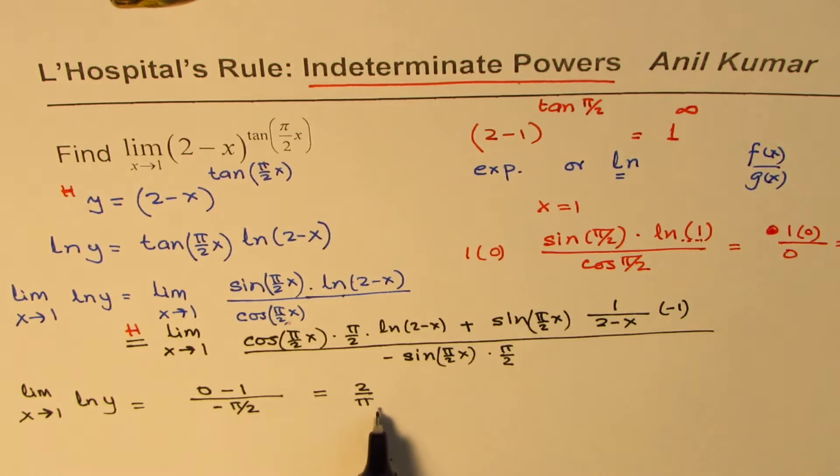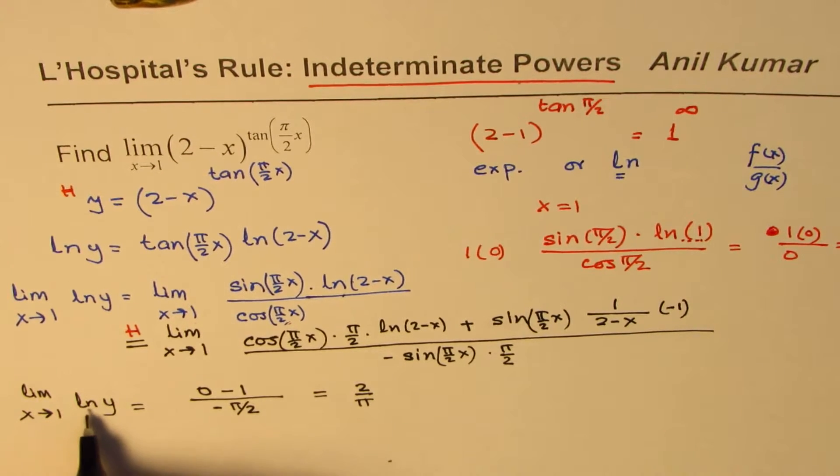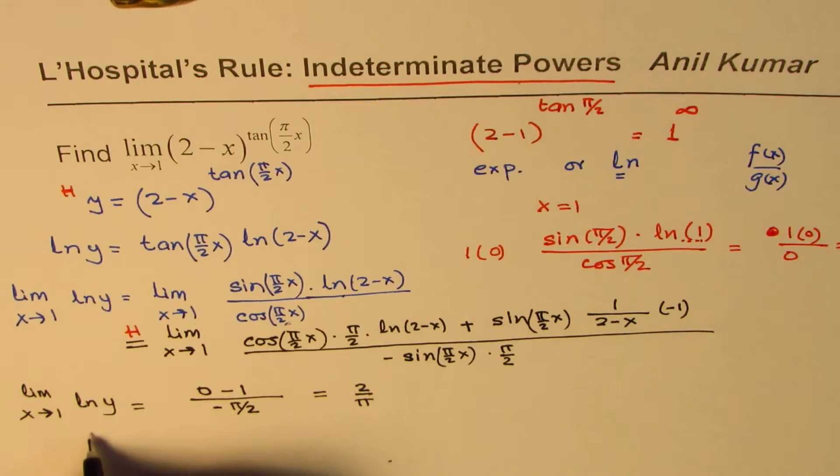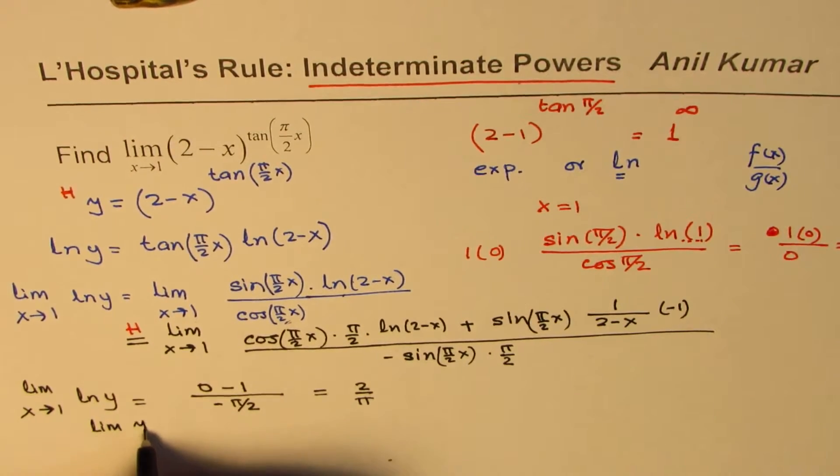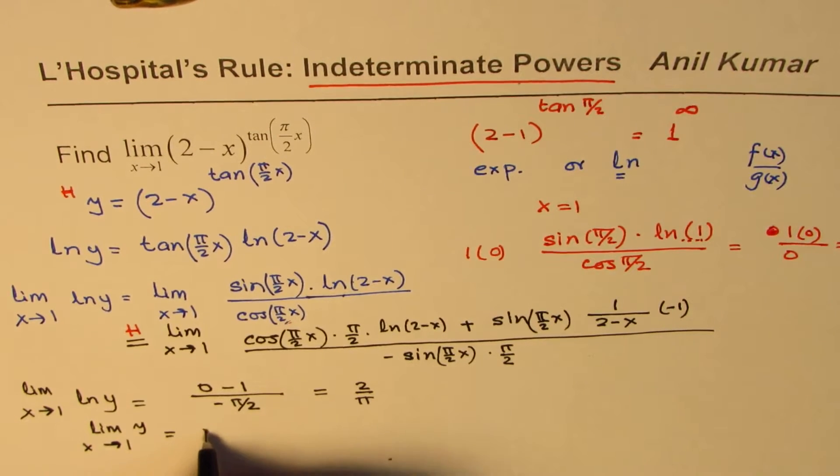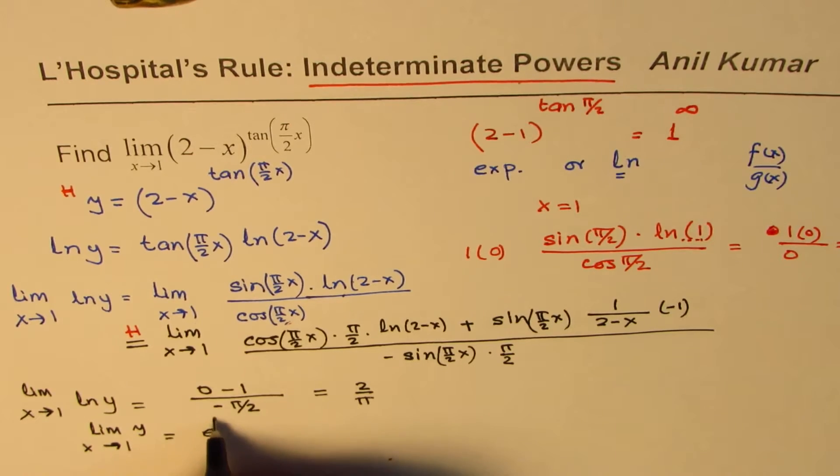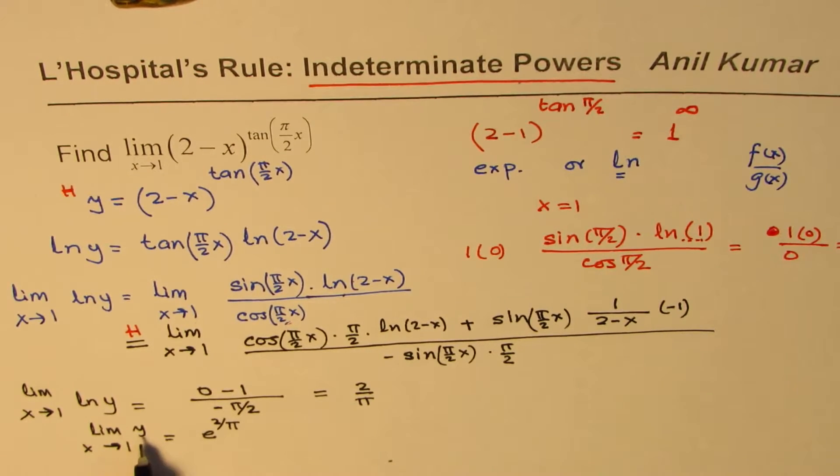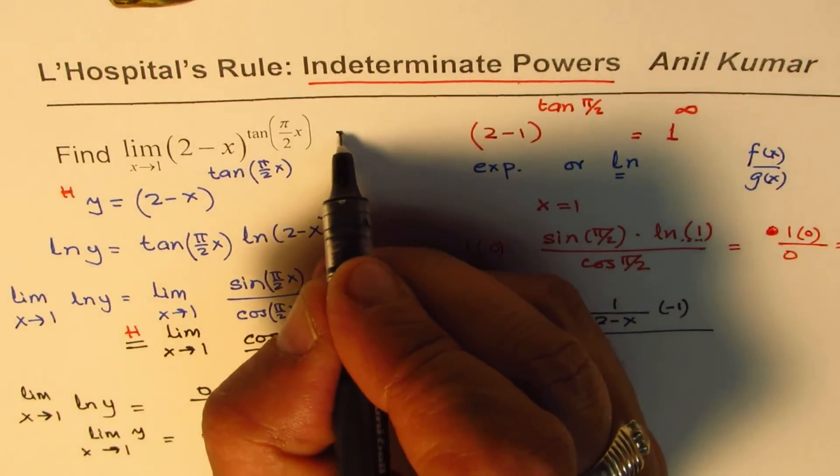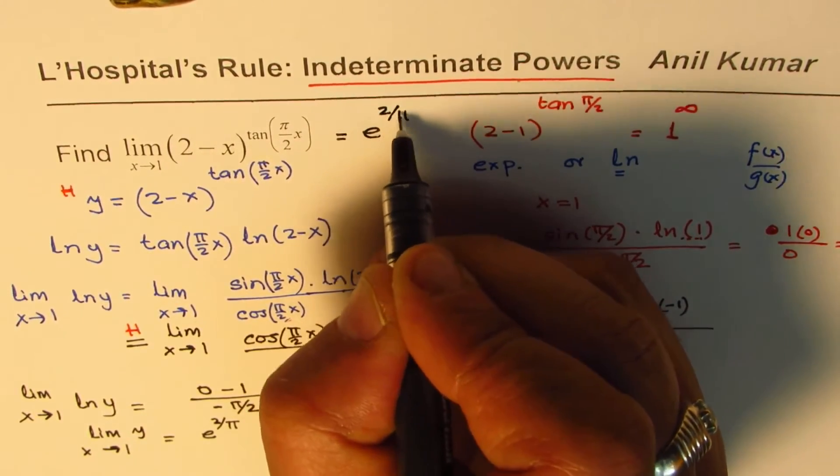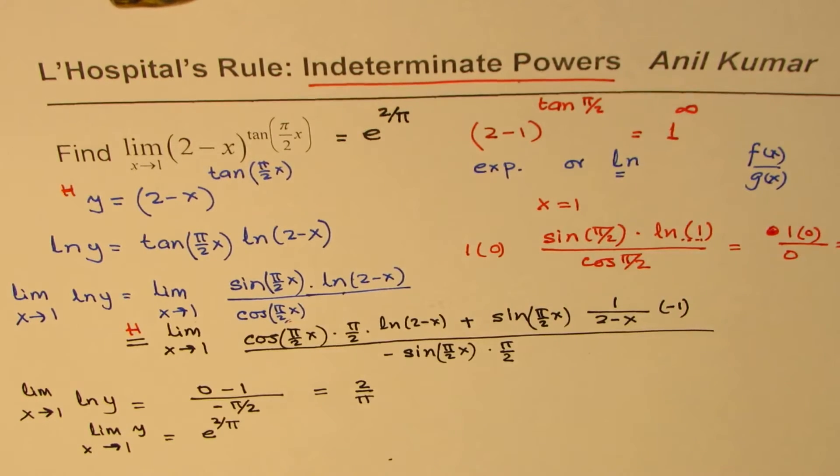So that really means what is the limit for y, which is this function? So we have limit for y as x approaches 1 as e to the power of 2/π. That is how, and what is y? Y is this function. So we can write this answer as e to the power of 2/π.